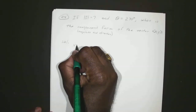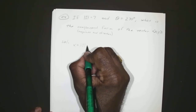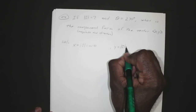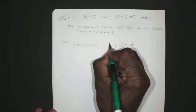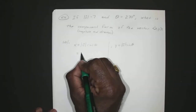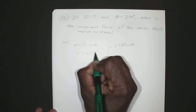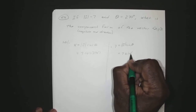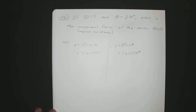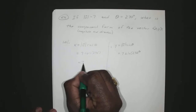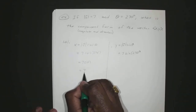We know that x is equal to the magnitude of v times cosine theta, and y is the magnitude of v times sine theta. So that means x is 7 times cosine of 270 degrees. Cosine of 270 degrees is zero, so you have 7 times zero, which is just zero.